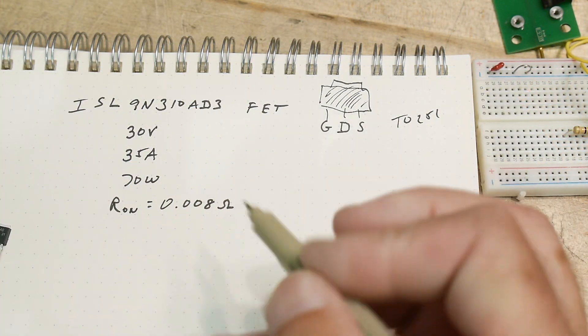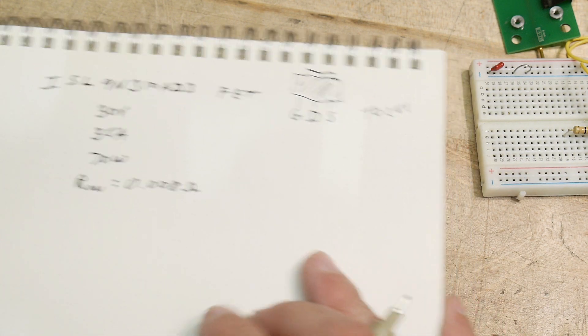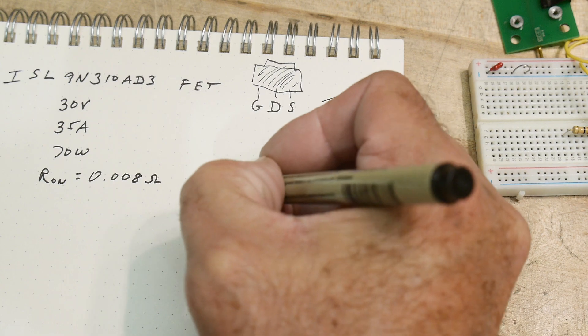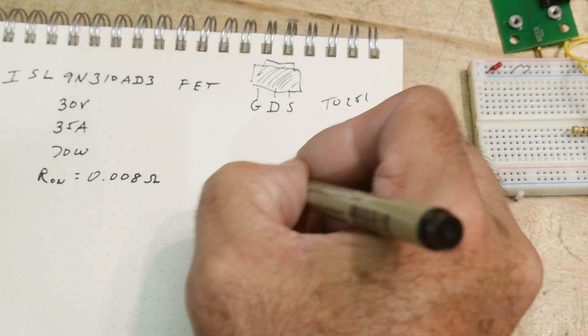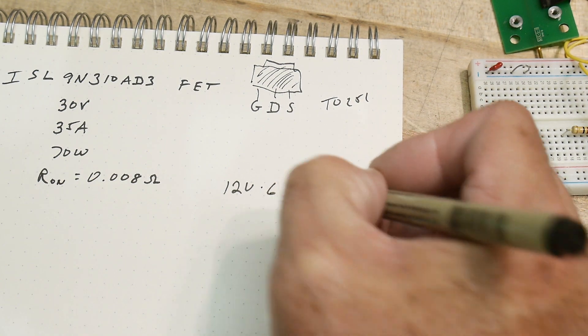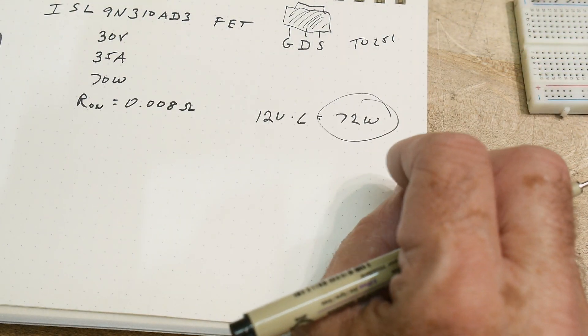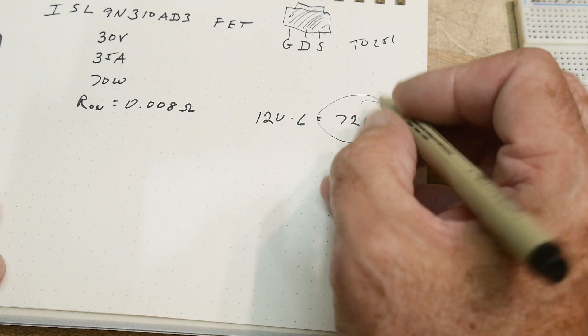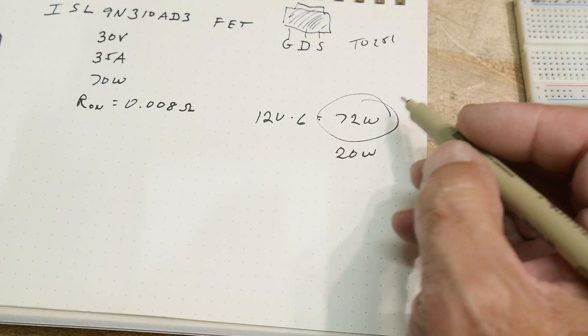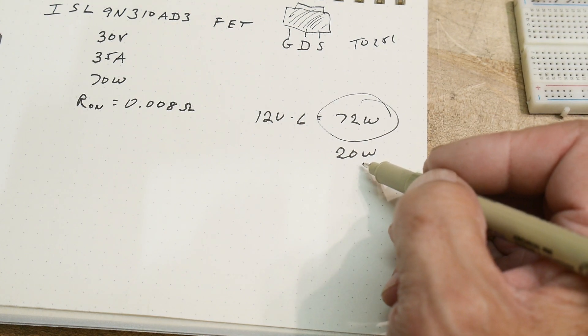All right, let's do some numbers then. We had six amps, right? And so we had 12 volts times six amps equals 72 watts. 72 watts. So I had a 20 watt resistor. So yeah, that resistor was going to fry any second.